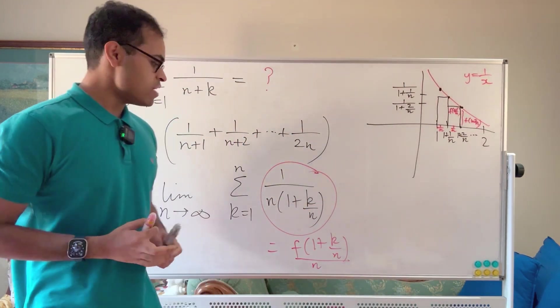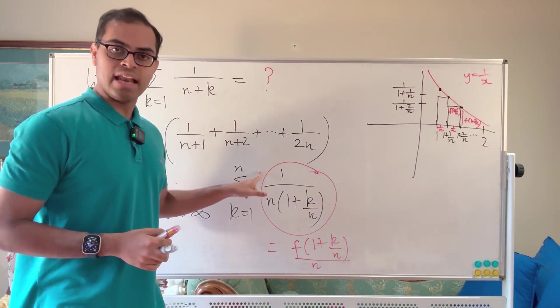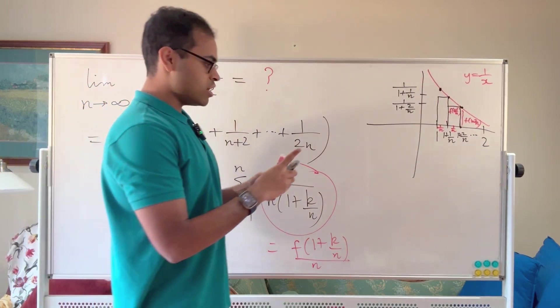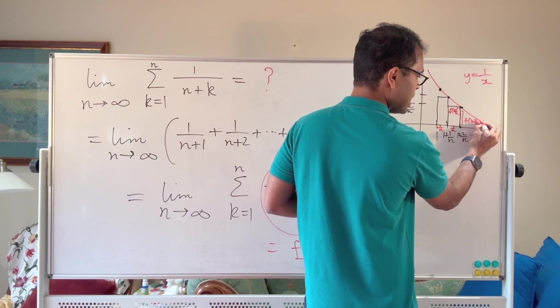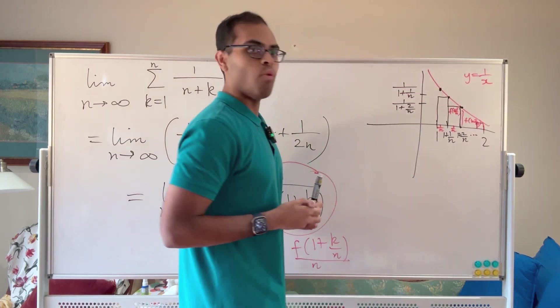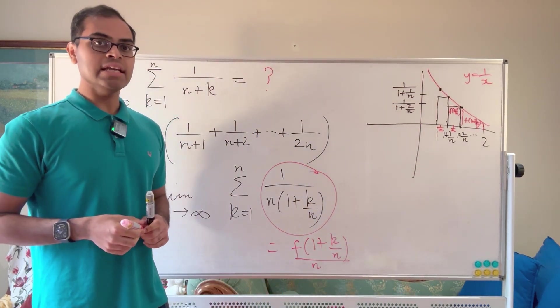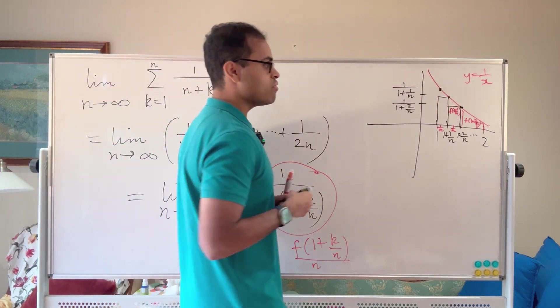Now if you add these up, as k varies all the way from 1 to n, then at the nth point you're going to get this rectangle. Again, it's going to start at 2 now and its height is going to be f of 2, which is 1 over 2, and its base is going to be equal to 1 over n again.